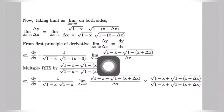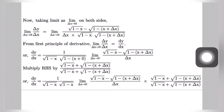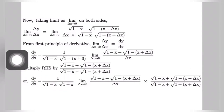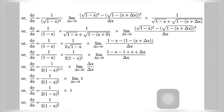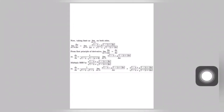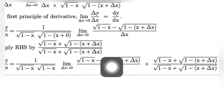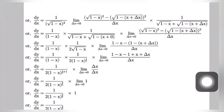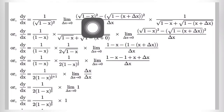Now the term inside the limit is of a form that requires rationalization. We multiply the term inside the limit by root under 1 minus x plus root under 1 minus x plus del x, all divided by root under 1 minus x plus root under 1 minus x plus del x. After multiplying, the numerator is in the form of a minus b times a plus b, which gives a squared minus b squared. This factor does not give an indeterminate form, so we take it out from the limit using del x equal to 0.